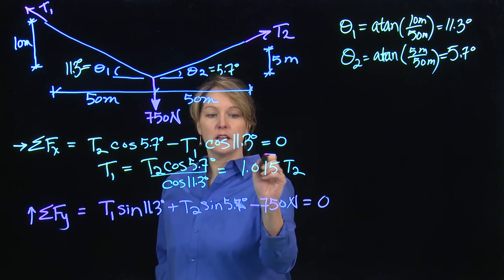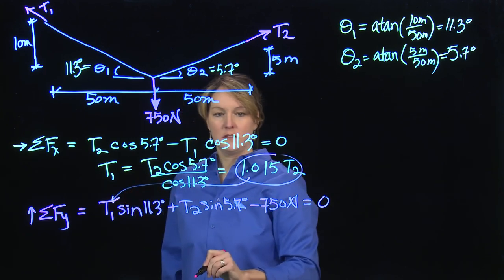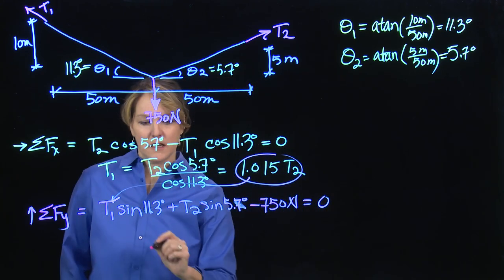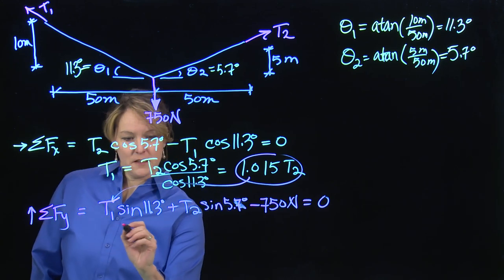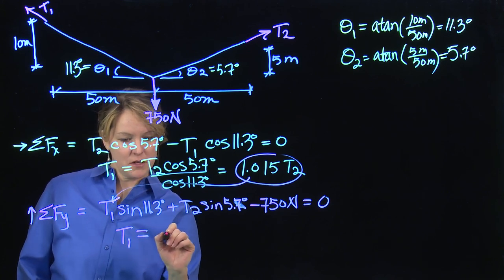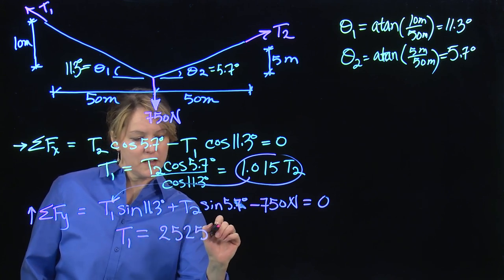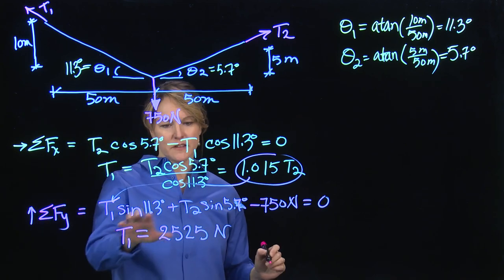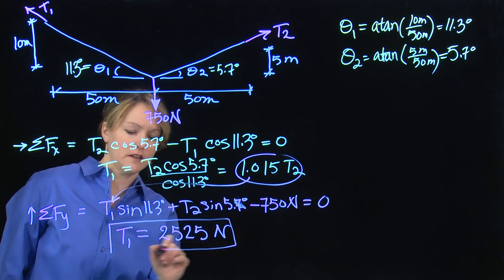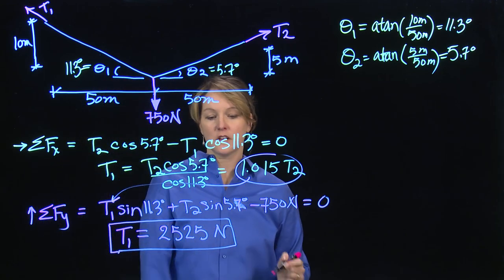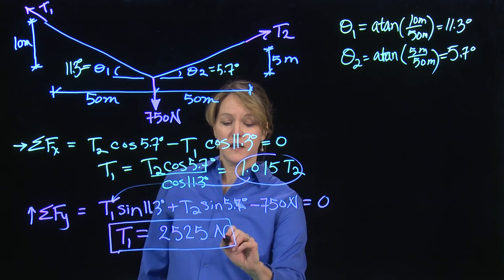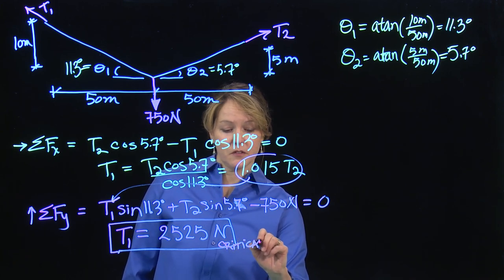I have two unknowns currently, but I can substitute in for T1 this T2 quantity, what I did before. And I can actually solve. I'm going to solve it actually for T1. T1 is going to be 2525 newtons. The way I have it set up, I'd solve for T2 first, and then plug it back in and get T1. I'm not showing that exact step, but it's an algebraic equation that I could solve for T1. T1 happens to be the larger of these forces, so I'm going to refer to that as my critical force.